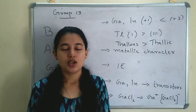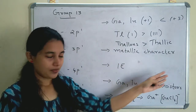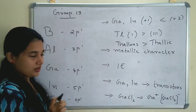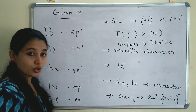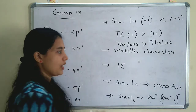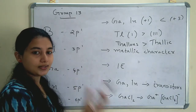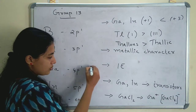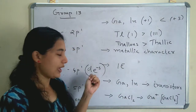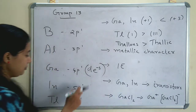Now coming to metallic character. Down the group, the size increases, so metallic character also increases. From boron to aluminium, the size increases so metallic character increases — aluminium is more metallic or more electropositive than boron. However, from gallium, indium and thallium, the trend is not the same because there are D-electrons. The shielding of D-electrons will affect the metallic character, so the metallic character does not increase as expected for gallium, indium and thallium.